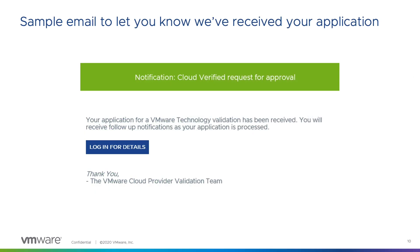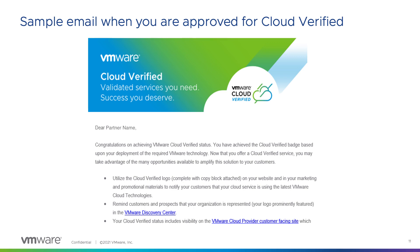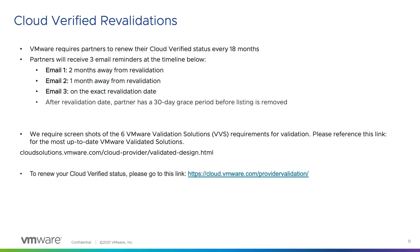After submitting your VMware Validated Design documentation, you will receive a similar email to the one on this slide. You are then in the review process, which should take 48 to 72 hours. Here I provided a sample email for when you are approved for Cloud Verified. VMware requires that all Cloud Verified partners revalidate their VMware Validated Solutions every 18 months to ensure partners are running the latest VMware technologies. You will receive an email at 60 days out from revalidation, 30 days out, then on the exact revalidation date. You will have a grace period of 30 days from your revalidation date before VMware delists your profile on our website.